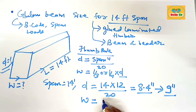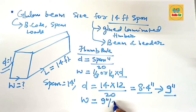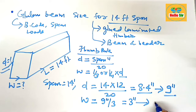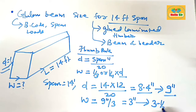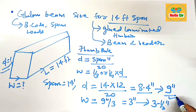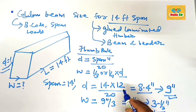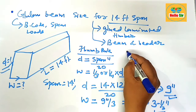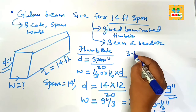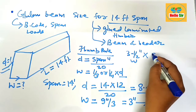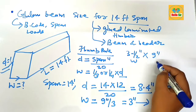The width should be one-third of the depth: 9 inches divided by 3 equals 3 inches. The nominal width taken is about 3.5 inches. So the nominal depth is 9 inches and the nominal width is 3.5 inches.